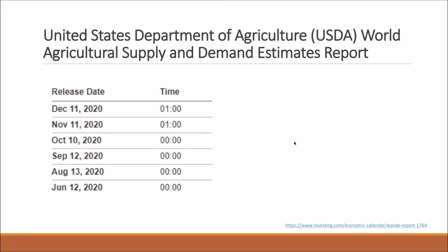For soybean trading, there's also the USDA supply and demand report — similar to Malaysia's MPOB data — which comes out on around the 11th or 12th of each month at roughly 12:00 noon Malaysian time. This report significantly influences prices, so you need to be aware if you have open positions. You can find it on an economic calendar — just Google it and bookmark it.